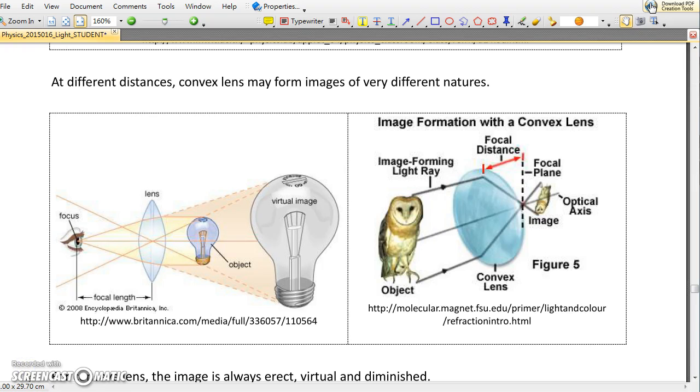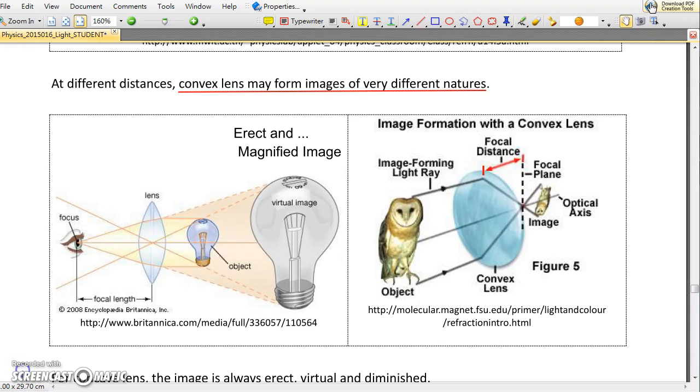You will see in the experiment today that for different distances, converging lens or convex lens will form images of very different nature. For example, for the lens on the left-hand side, it forms an image bigger than the object, so it is a magnified image. And we can easily see that the image is erect. And since it is erect, we know it is virtual.